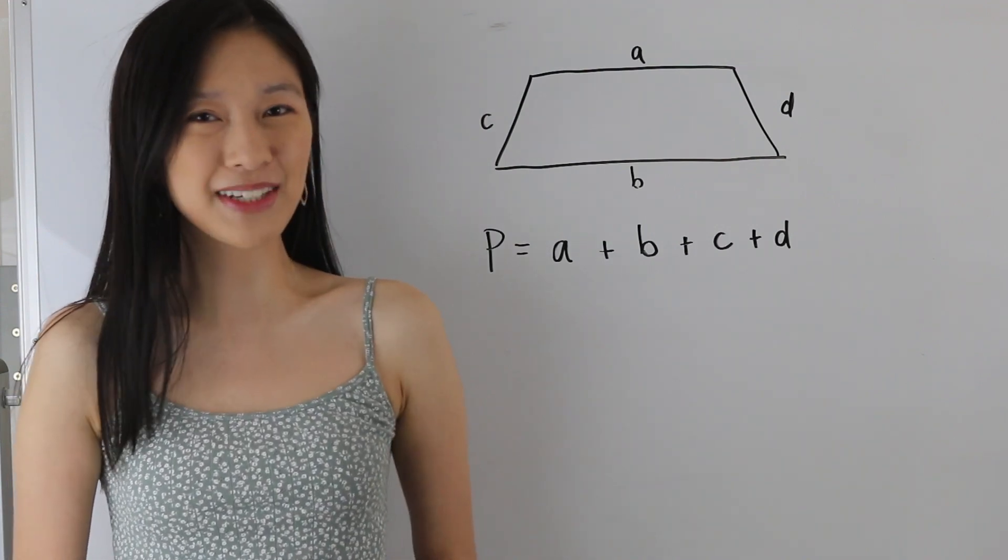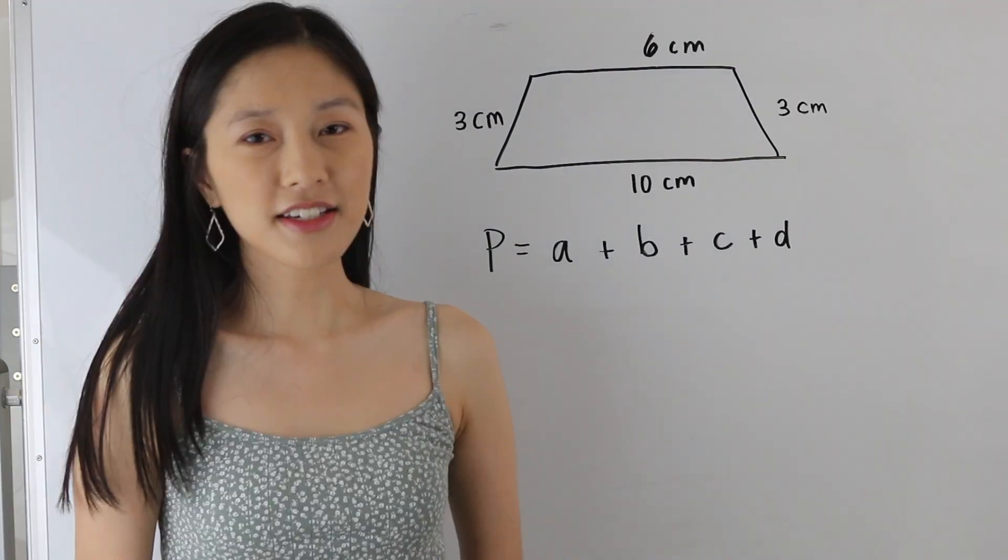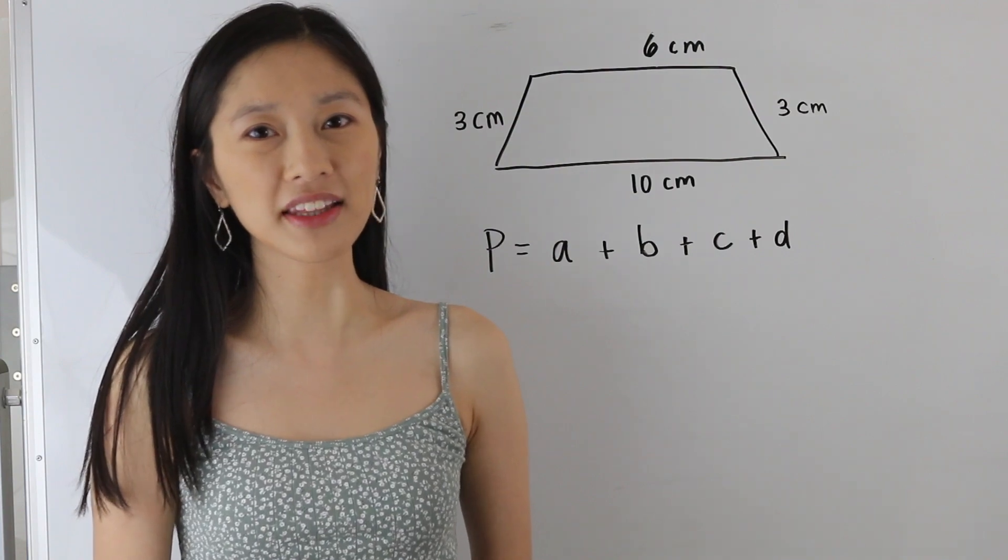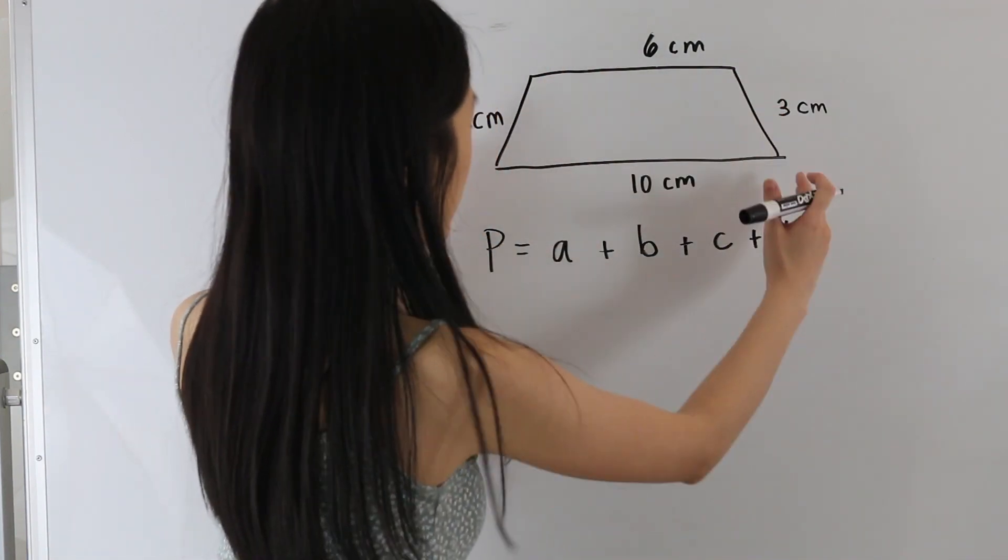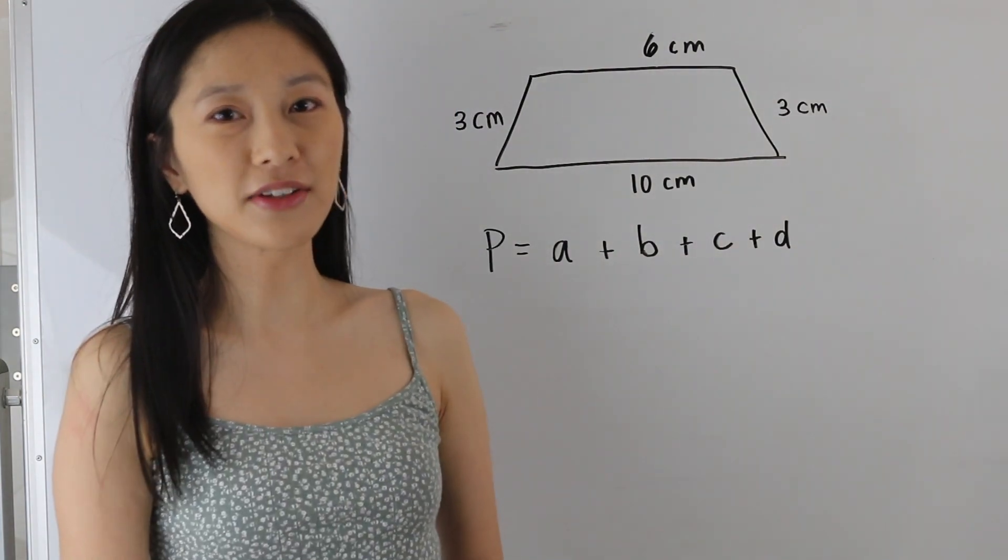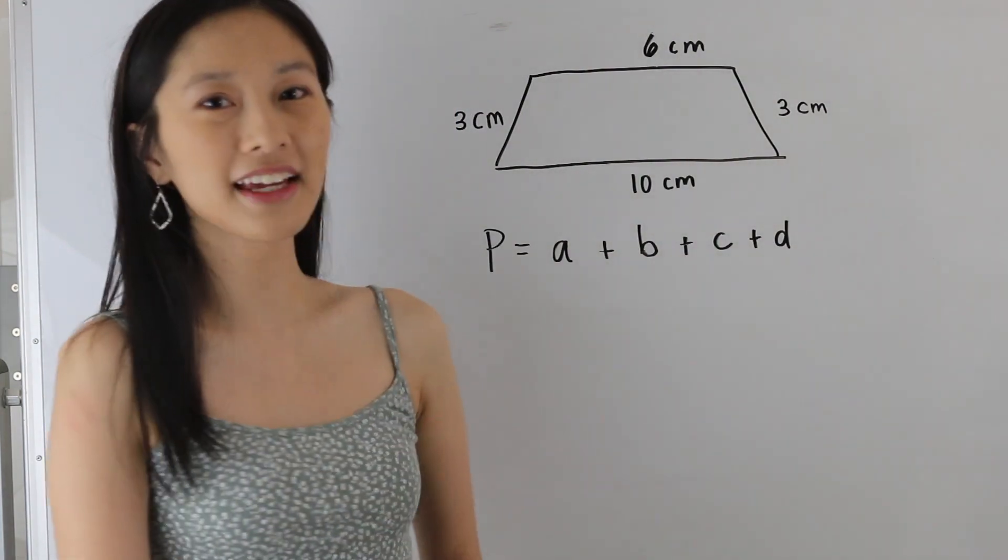So let's go ahead and take a look at some examples so we can apply our formula. So here we have a trapezoid and we are given the measures of its bases and its side lengths. So let's go ahead and plug in these values into our formula here and get our perimeter.